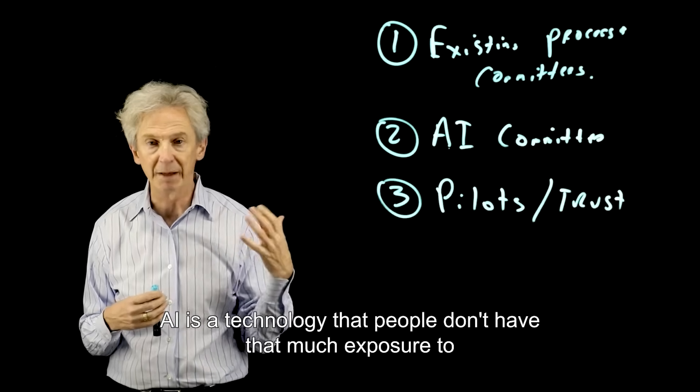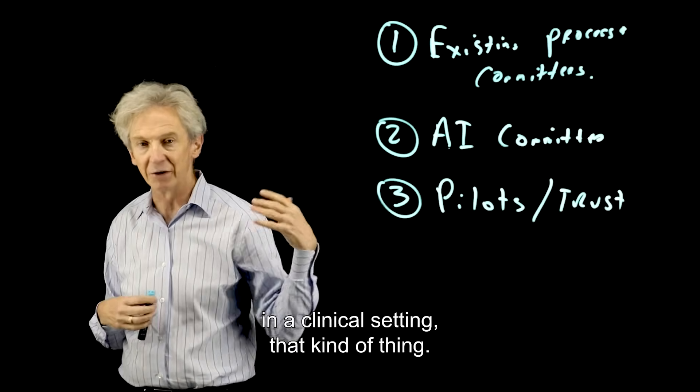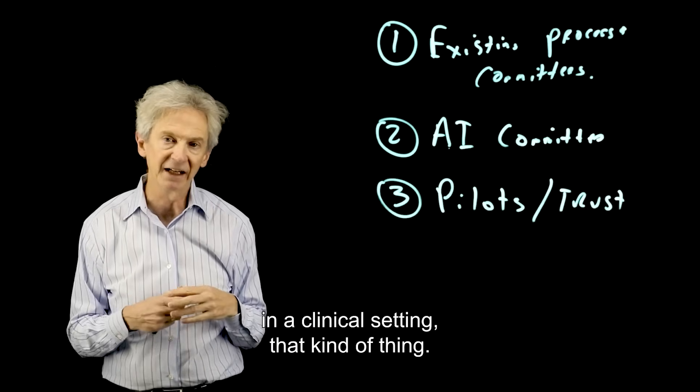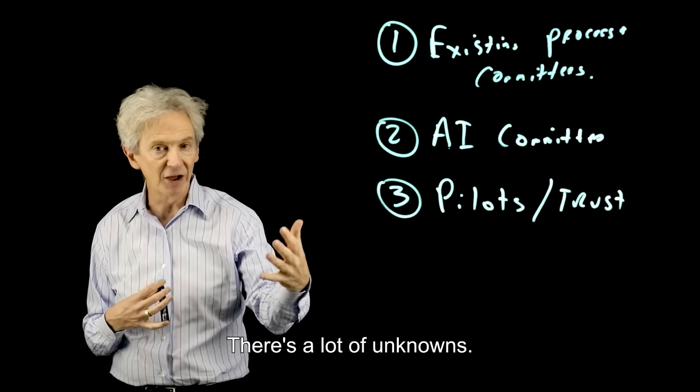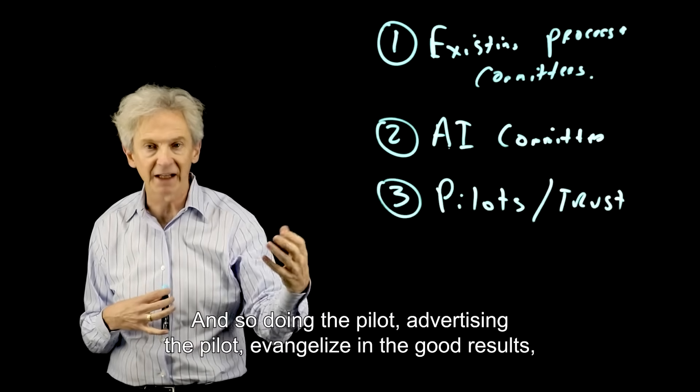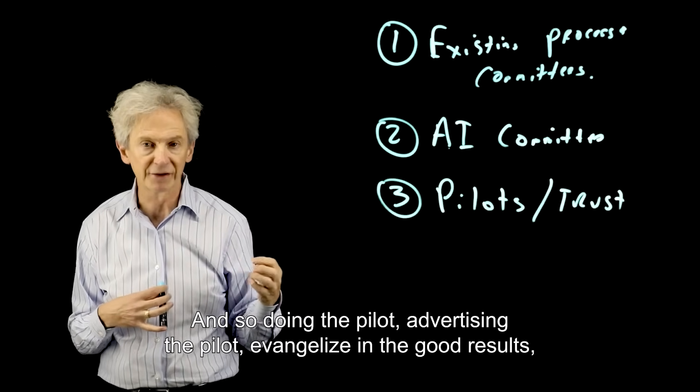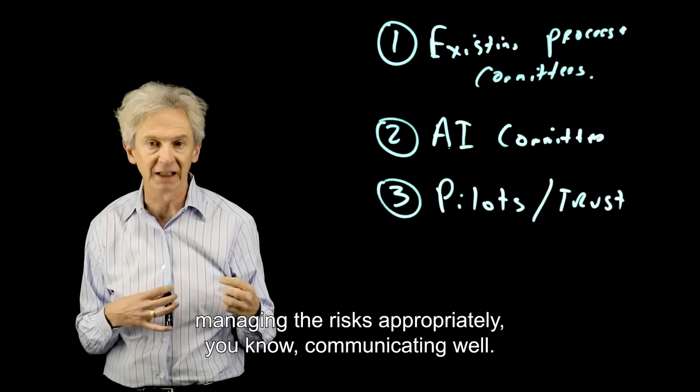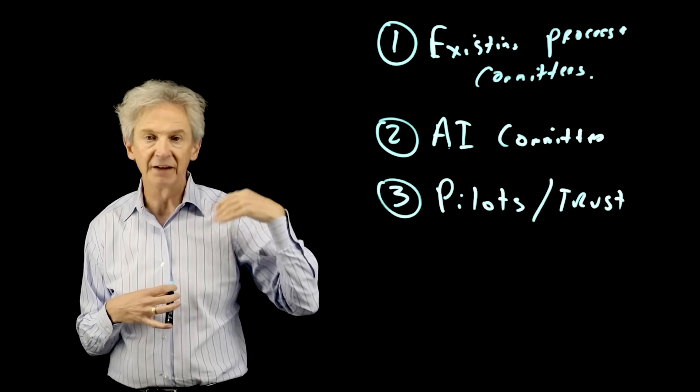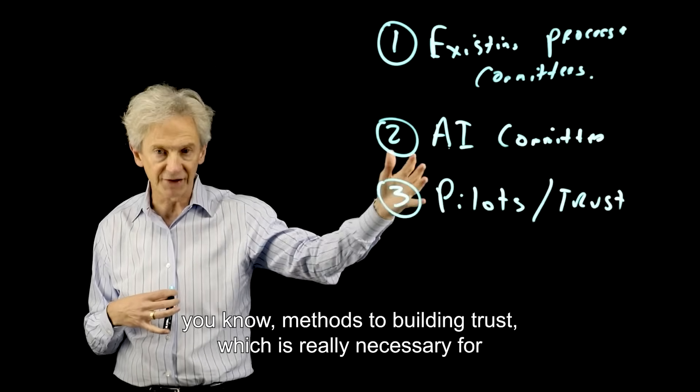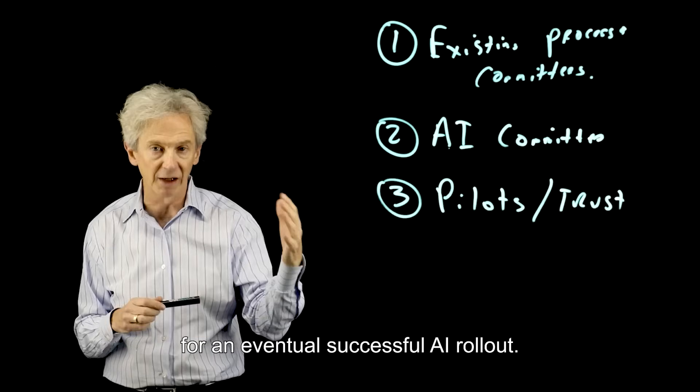the need to build trust. AI is a technology that people don't have that much exposure to in a clinical setting, that kind of thing. So people are nervous about it. There's a lot of unknowns. And so doing the pilot, advertising the pilot, evangelizing the good results, managing the risks appropriately, communicating well - these are all methods to building trust, which is really necessary for an eventual successful AI rollout.